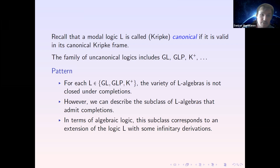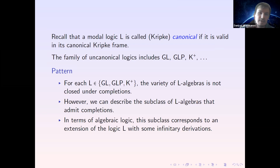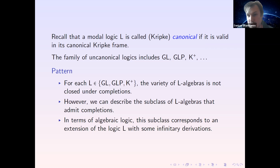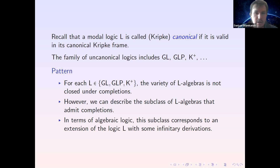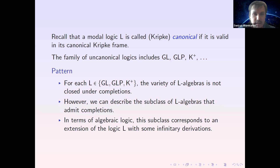So K-plus is an uncanonical modal logic — it is not valid in its canonical Kripke frame. Though we have a rich theory of canonical modal logics, we know much less about uncanonical ones. However, the family of uncanonical logics includes such interesting logics as GL, GLP, K-plus, the modal mu-calculus, and propositional dynamic logic. In this talk I would like to discuss a pattern which holds for all three logics GL, GLP, and K-plus, which I noticed when investigating certain infinitary derivations for each of them respectively.